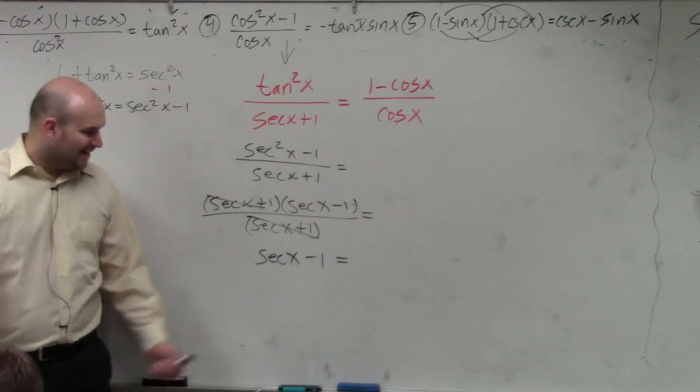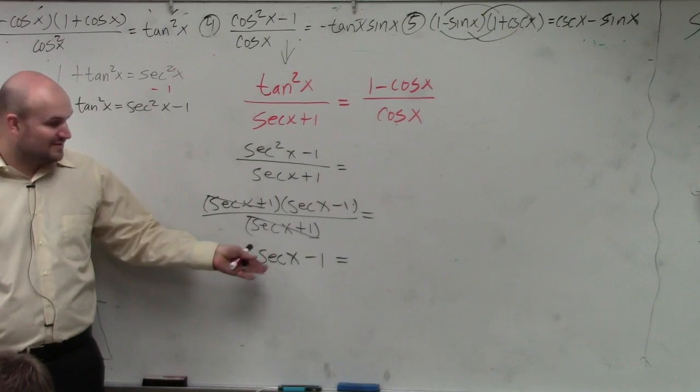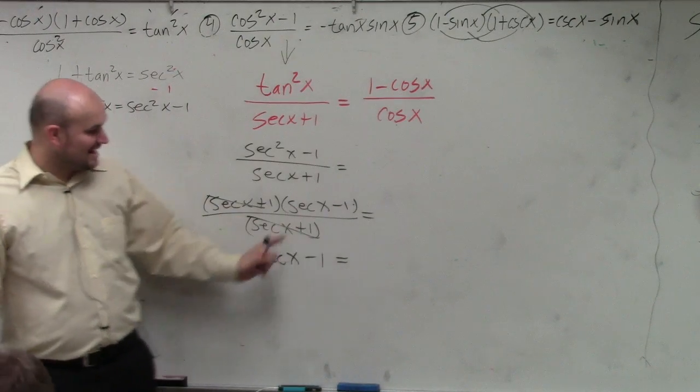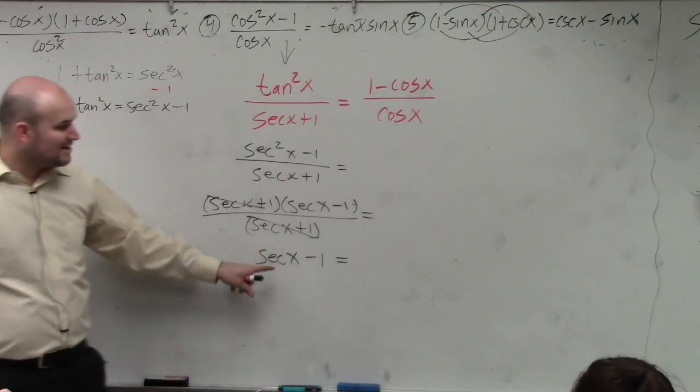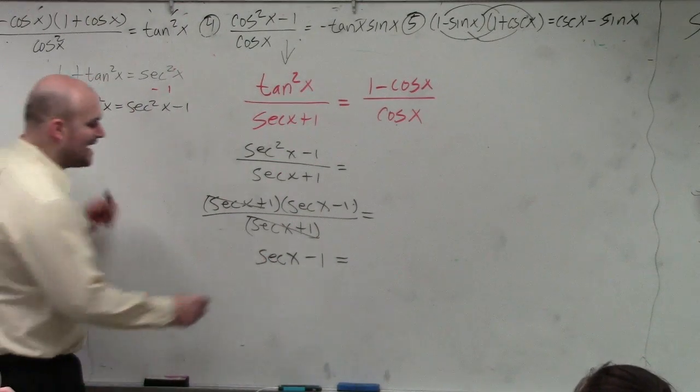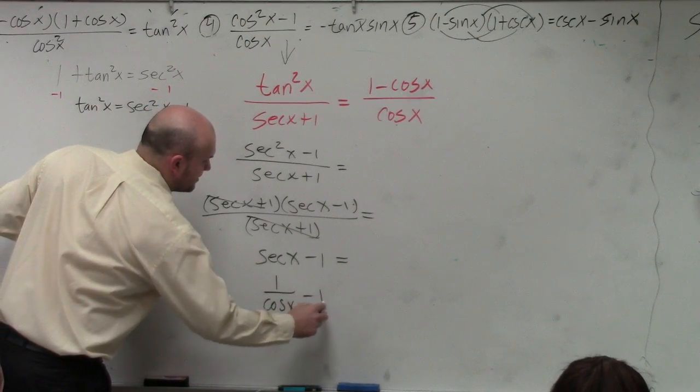Well, we're close. I mean, kind of. I have secant, so I at least got rid of this. But now I have it as a term. I needed to write it as a fraction. Well, one thing we notice is, secant of x minus 1, I can rewrite that as 1 over cosine of x minus 1.